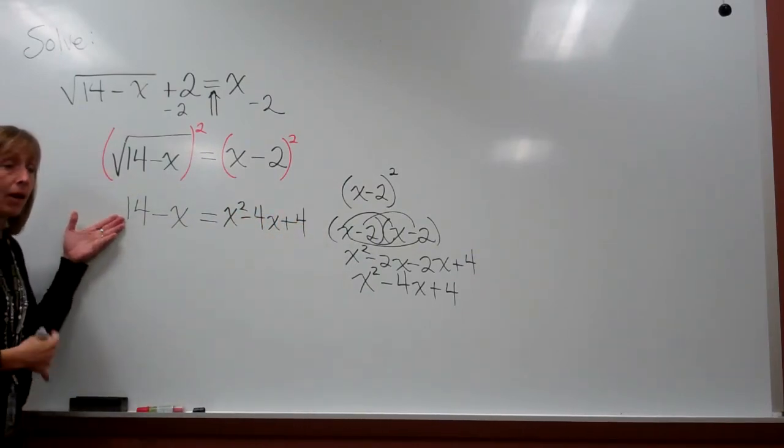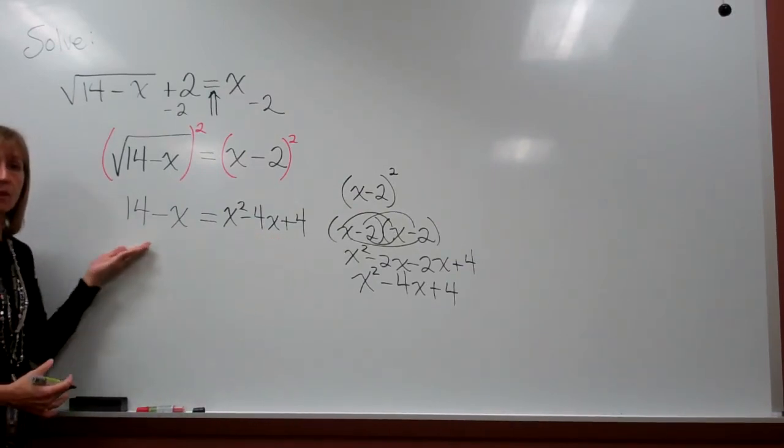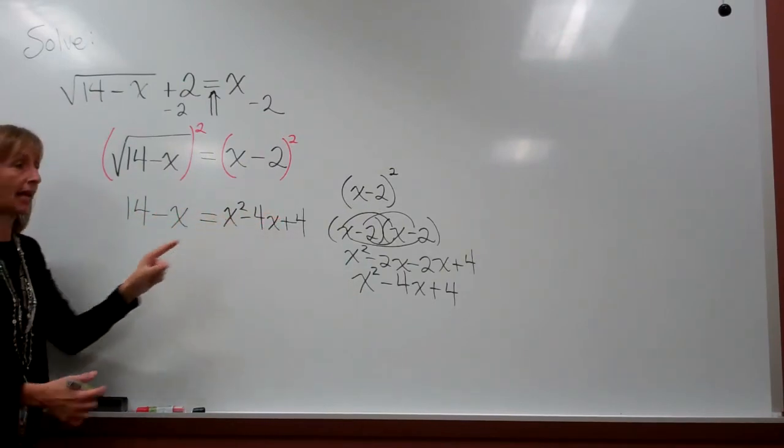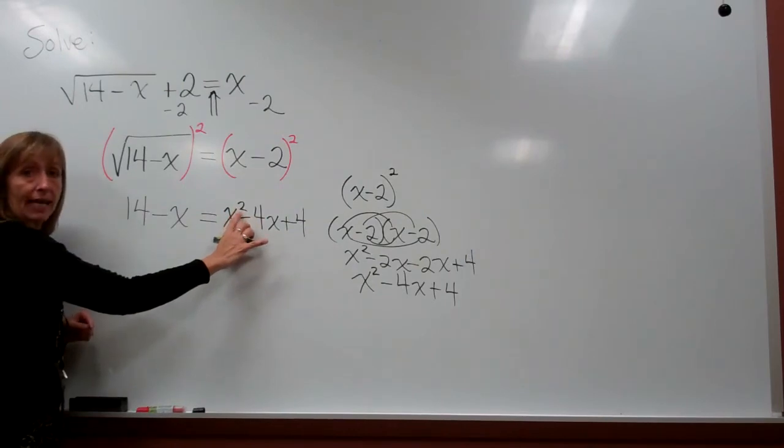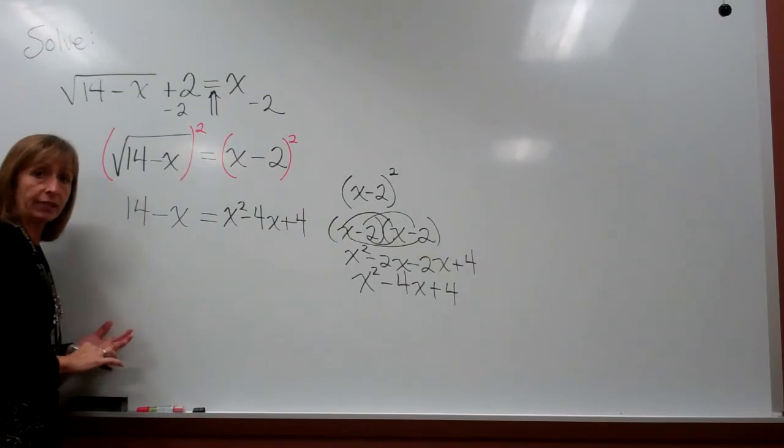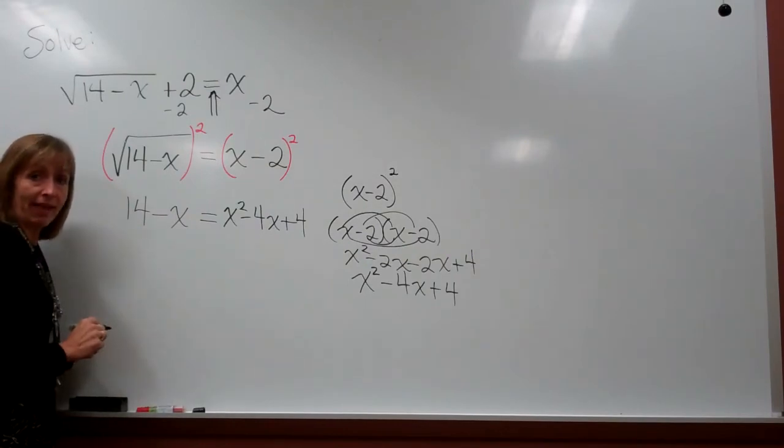At this stage, our radical has been removed, and we want to solve this resulting equation. We notice when we look at the exponents on the x, the highest degree term has a square on the x, so it's quadratic. Quadratic equations we can solve by factoring, completing the square, or the quadratic formula. Let's go ahead and try to solve this by factoring.